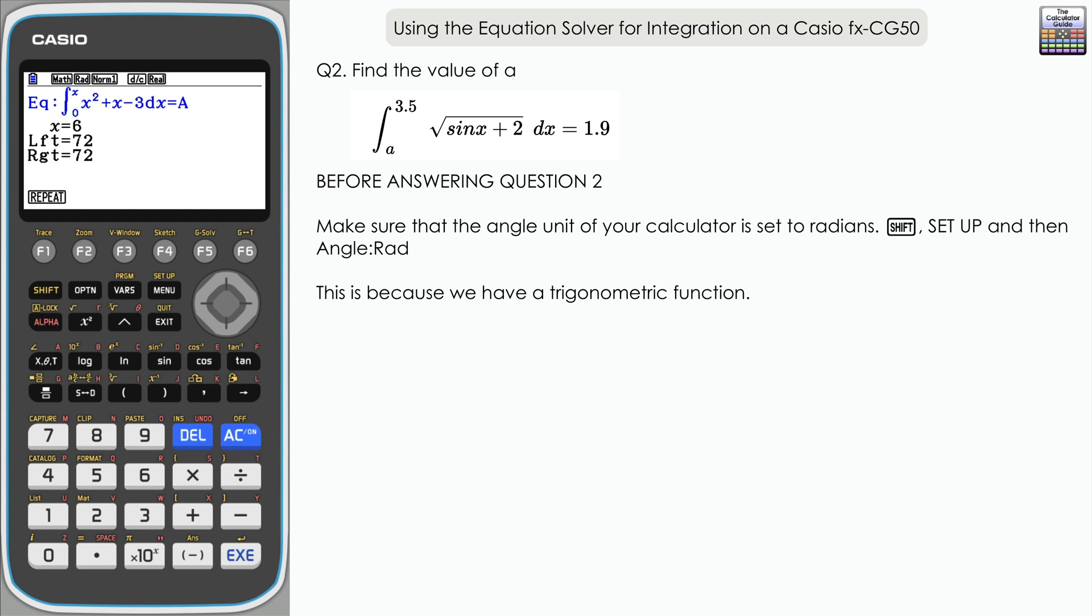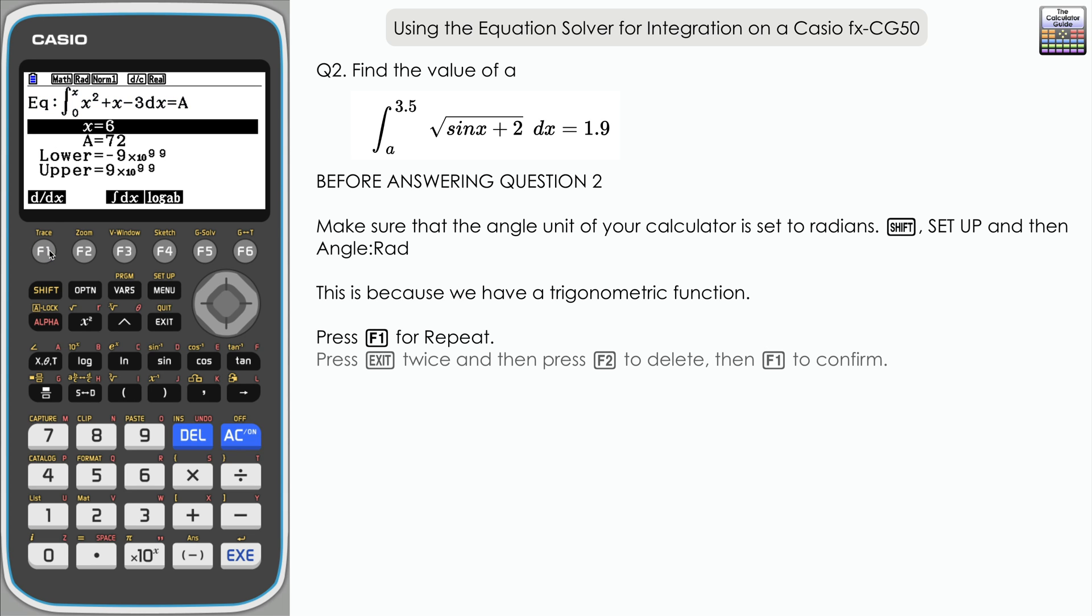We've got a second question here. I'm going to press F1 to repeat, but I need to delete the equation we've already got. I'm going to press exit twice to come out of that, then select F2 for delete, then F1 to confirm yes. That's cleared it out, and we're back to where we were at the very beginning.